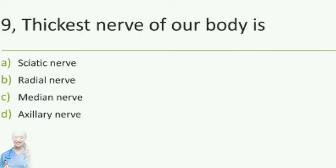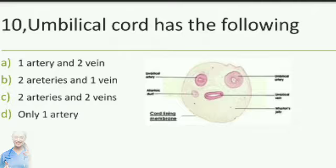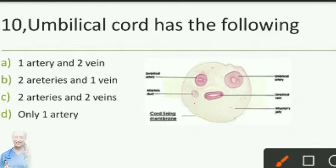Question number 9: Thickest nerve of our body is — option A sciatic nerve, option B radial nerve, option C median nerve, option D axillary nerve. The answer is the sciatic nerve. Question number 10: Umbilical cord has — option A one artery and two veins, option B two arteries and one vein, option C two arteries and two veins, option D only one artery. The answer is option B, two arteries and one vein.